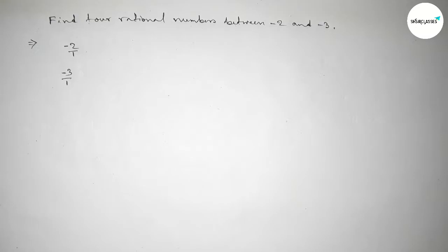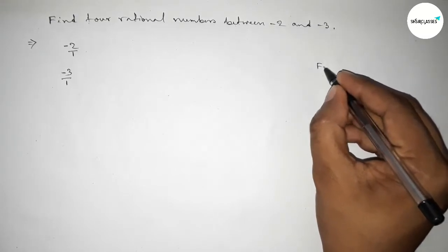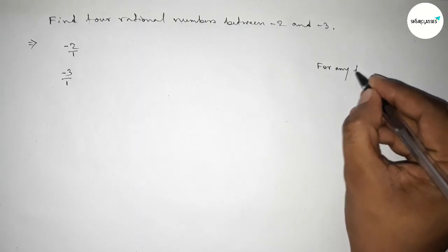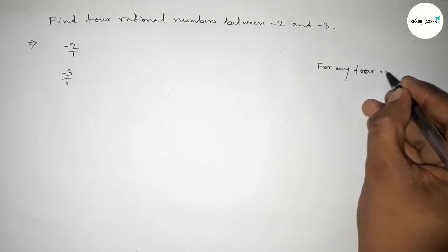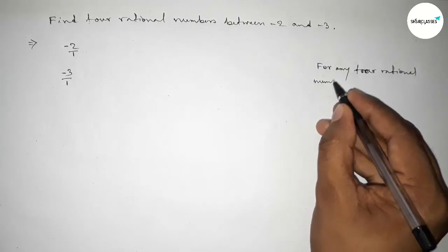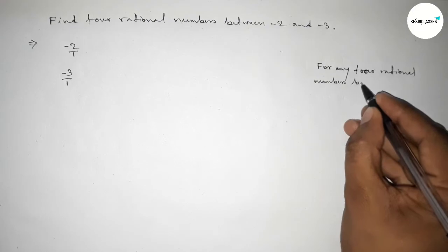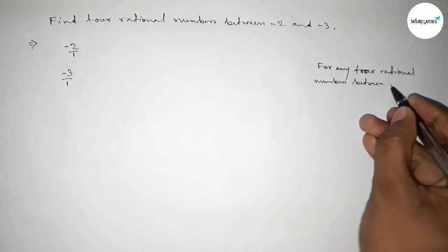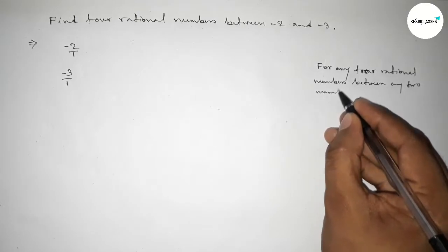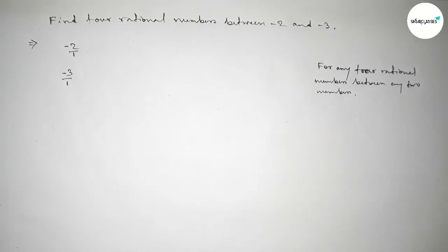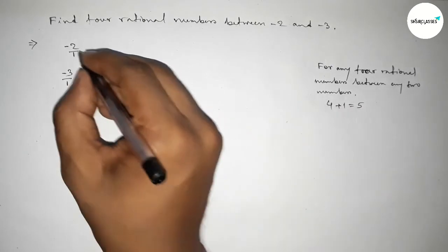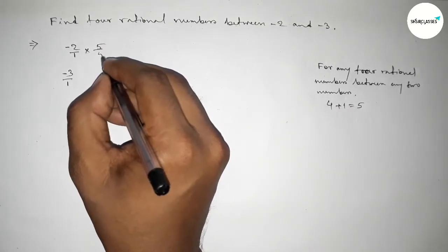Now let's discuss here an important method. The method for finding any four rational numbers between any two numbers is: we have to multiply both numbers by 4 plus 1 equals 5. So we should multiply both numbers by 5 by this way.